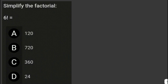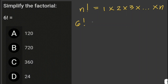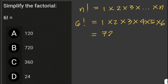Simplify 6 factorial. To solve a factorial, recall that n factorial is equal to the product of the whole numbers from 1 to n — that is 1 times 2 times 3 times n. So 6 factorial equals 1 times 2 times 3 times 4 times 5 times 6, which equals 720. Therefore, 6 factorial equals 720, and the answer is letter B.